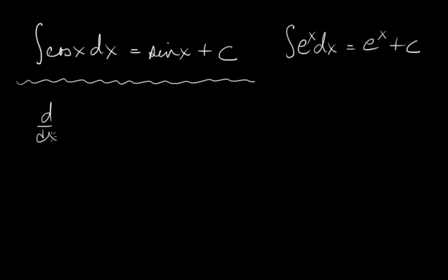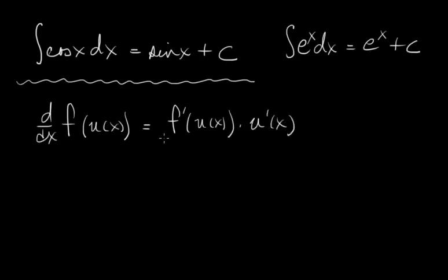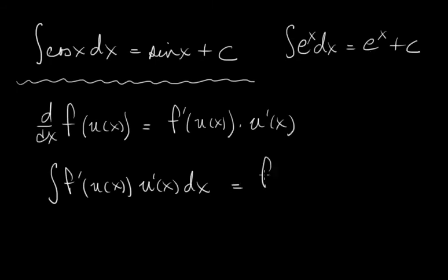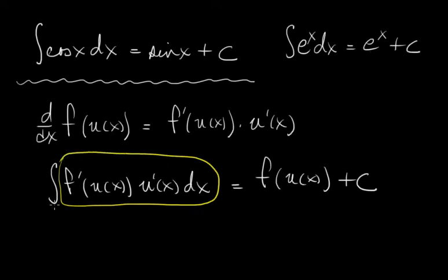But most of our problems are going to be more complicated than this, so let's review the chain rule. The derivative with respect to x of f(u(x)) is f prime of u(x) times u prime of x. This tells us that the integral of f prime of u(x) times u prime of x dx equals f(u(x)) plus a constant. Our task will often be to recognize a form like this — to recognize the chain rule in reverse — finding what u is and recognizing its derivative.